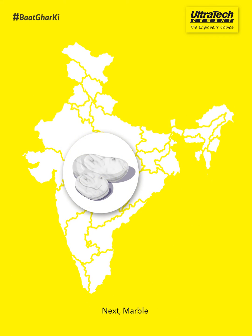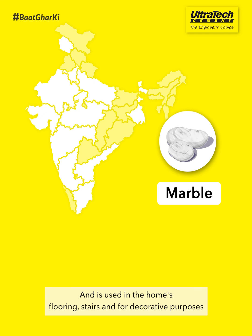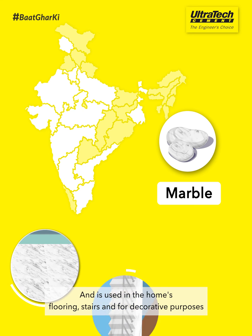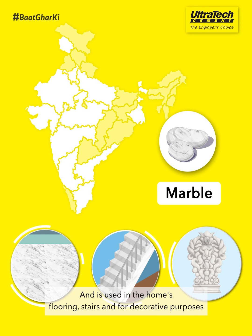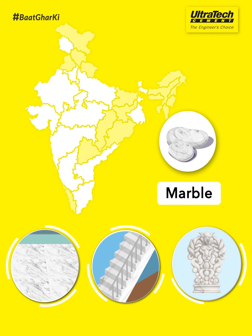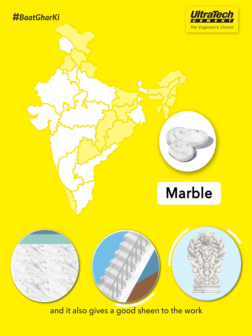Next, marble. It is usually available in central and western India and is used in the home's flooring, stairs, and for decorative purposes. Marble can be carved easily and it also gives a good sheen to the work.